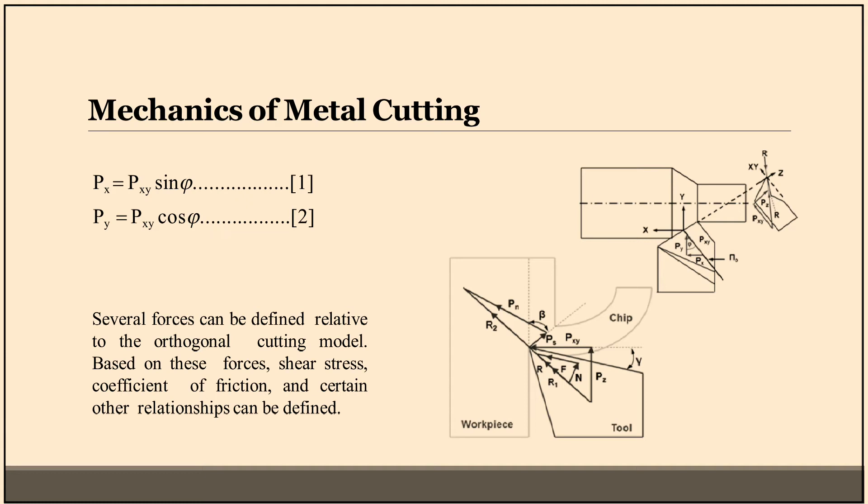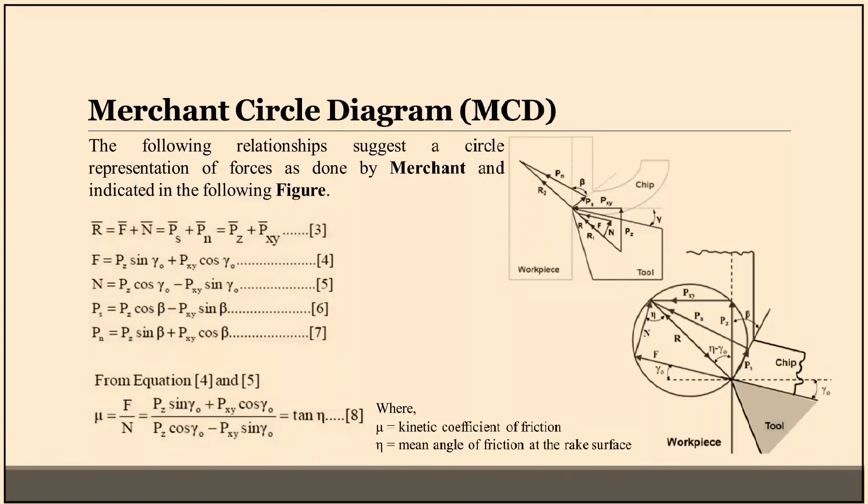Merchant Circle Diagram or MCD. There are two pictures. The following relationships suggest a circle representation of forces as done by Merchant and indicated in the following figure. Equation three: R is equal to F plus N, that means Ps plus Pm, that means Pz plus Pxy.